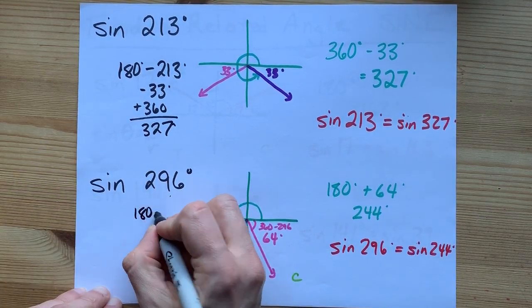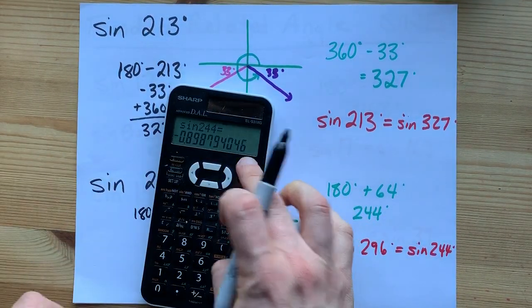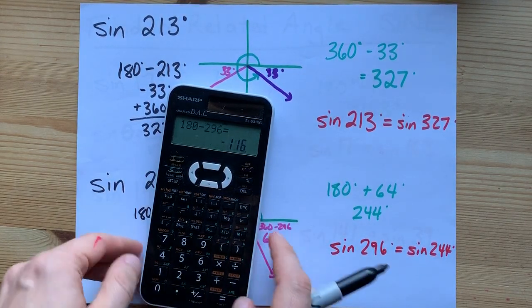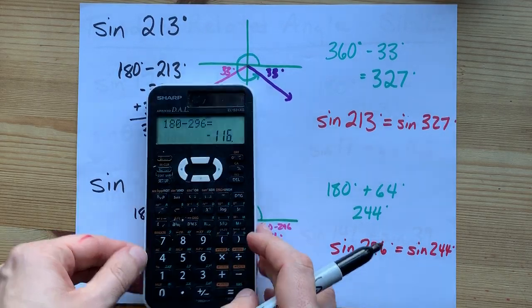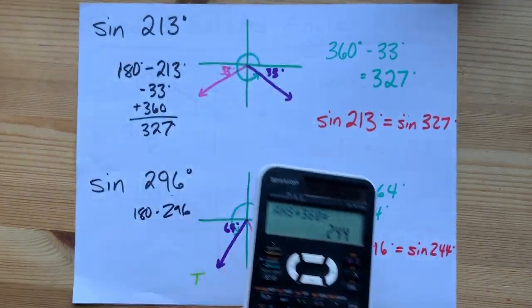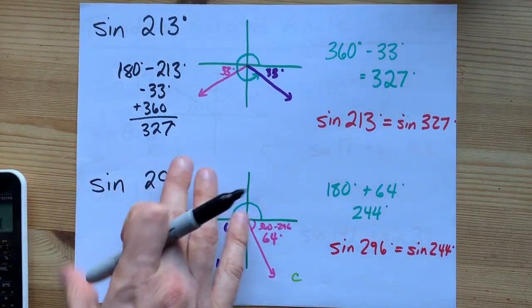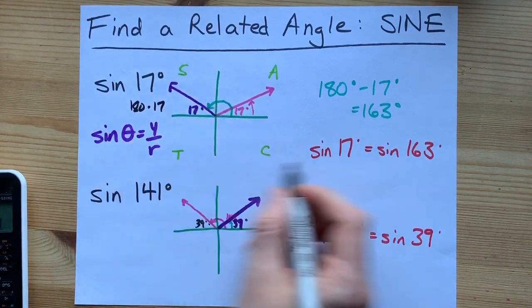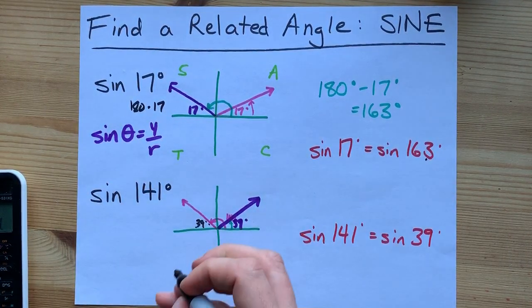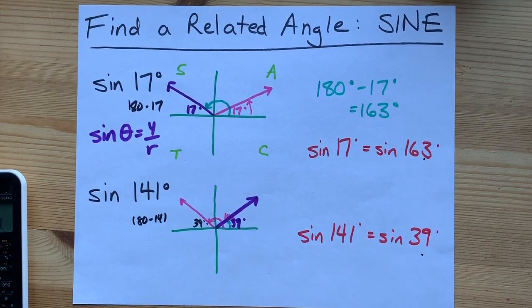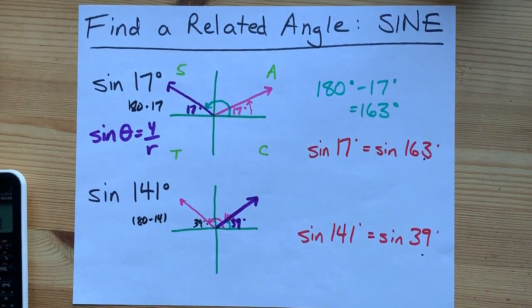When I do that, I get 327. Oh my. What's 180 minus 296? I don't even know. 180 minus 296 gives me negative 116 plus 360. 244. What? It works here as well. 180 minus 17 is 163. 180 minus 141 is 39. There's your super shortcut.